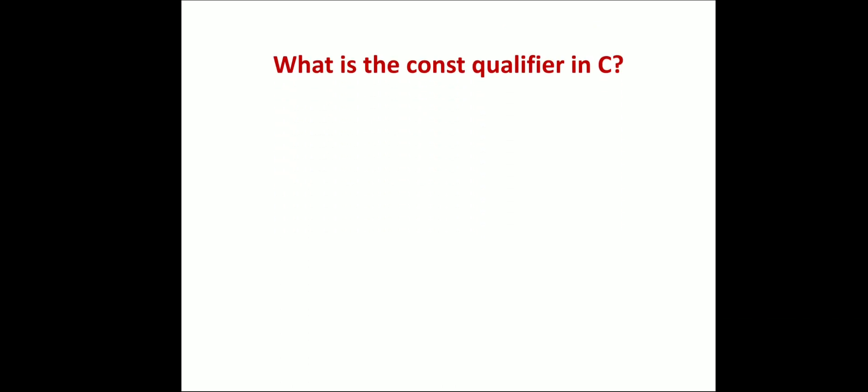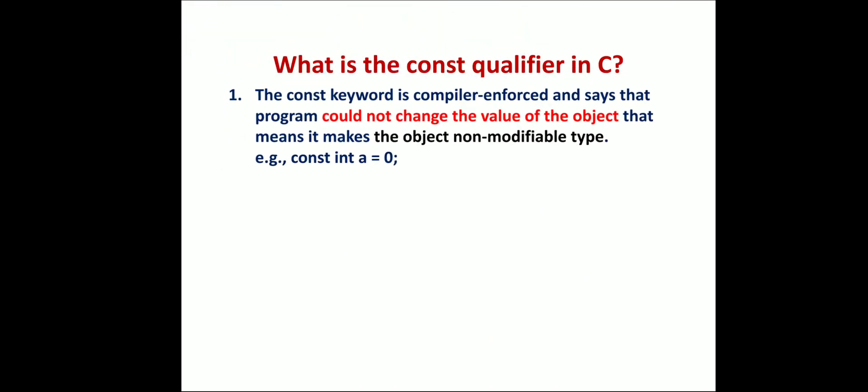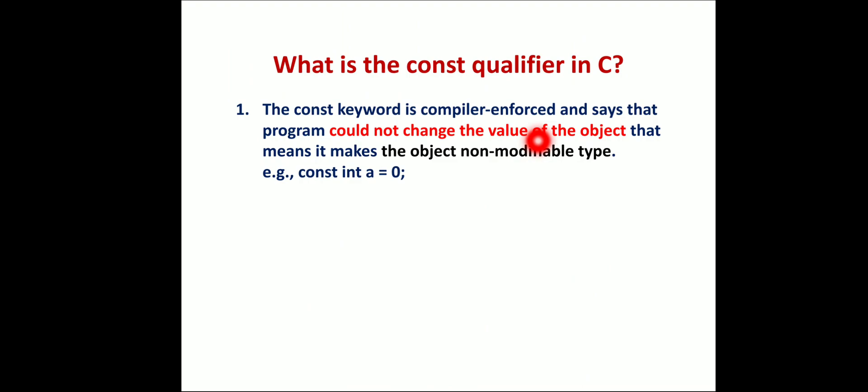What is the const qualifier in C? The const keyword is compiler-enforced and says that the program could not change the value of the object. It makes the object a non-modifiable type. For example, const int a equals 0 - it will not modify inside the program.